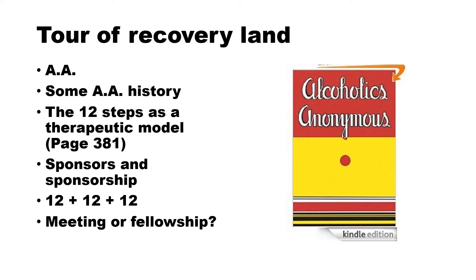There are three separate 12s that people involved with Alcoholics Anonymous are aware of. The 12 steps — originally three steps, expanded to six and finally to twelve — are a process of recovery. The 12 traditions are the rules that groups are governed by. And there are the 12 concepts of world service. AA is the granddaddy of the self-help fellowships; there are now over 200 twelve-step groups that came about by using the AA model and modifying the steps for other problems.